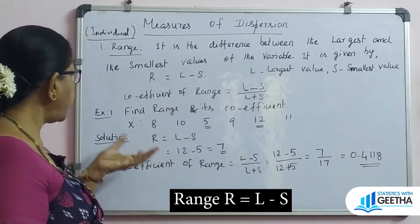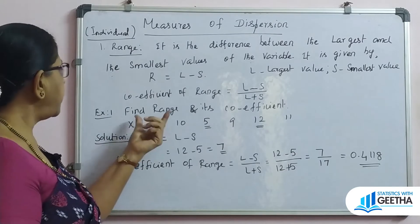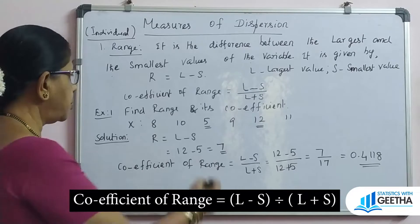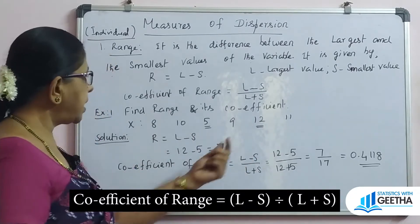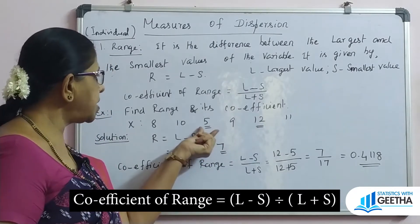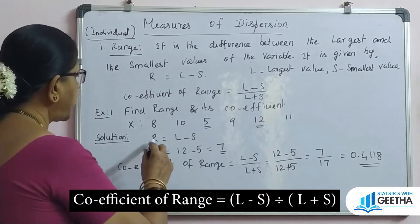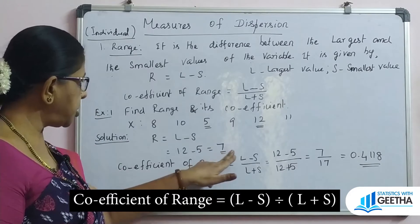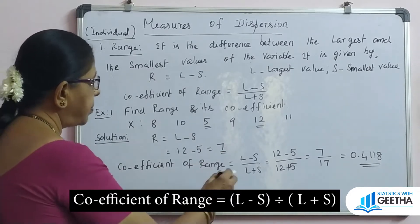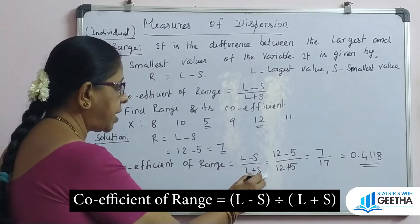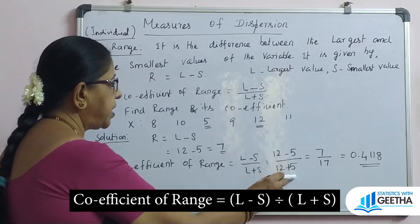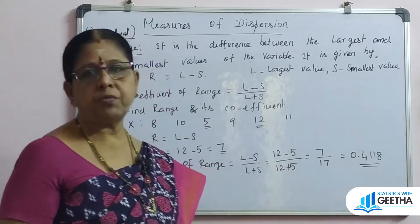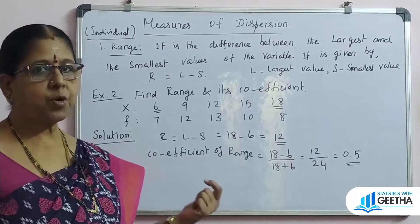For individual series: find range and its coefficient. From the given X values, identify the largest item L and the smallest item S. Using the formula R = L minus S, where L is 12 and S is 5, R = 7. Coefficient of range = (L minus S) divided by (L plus S) = (12 minus 5) divided by (12 plus 5) = 7 by 17, which is equal to 0.4118.